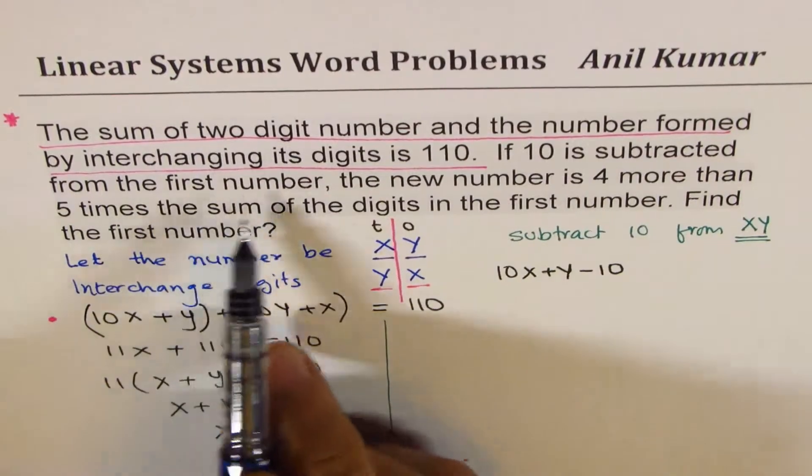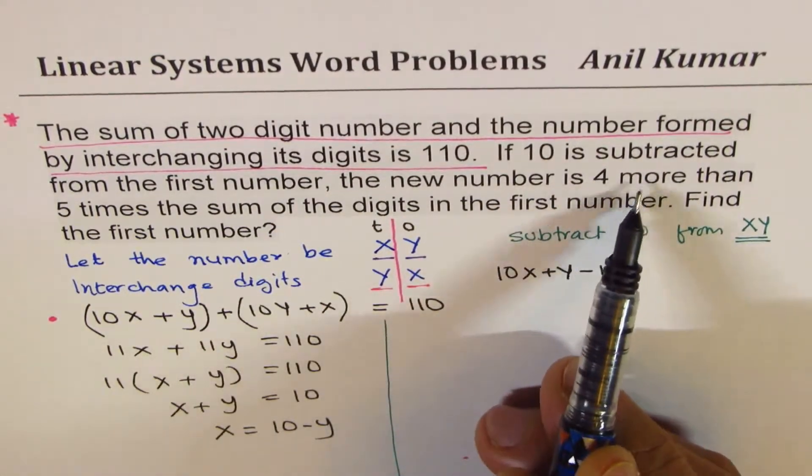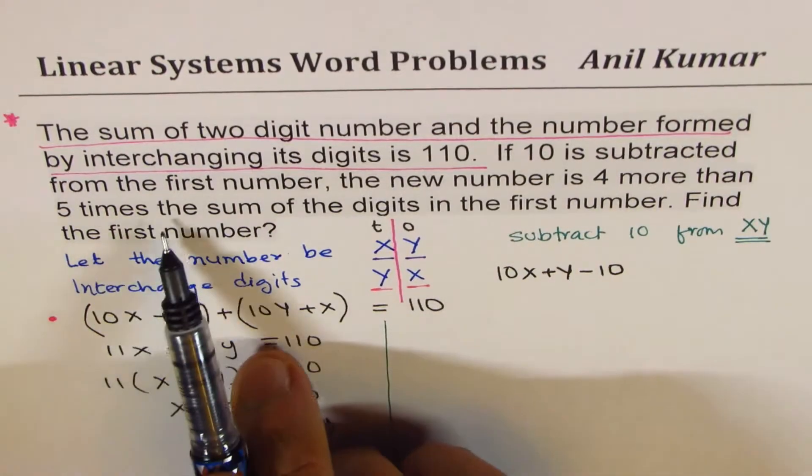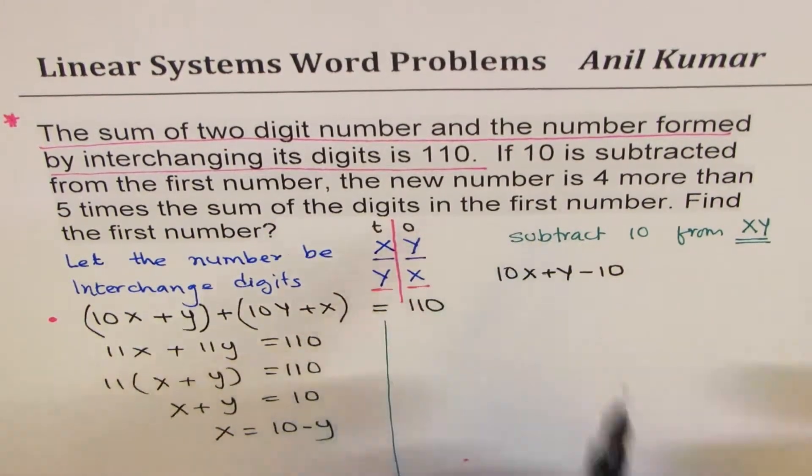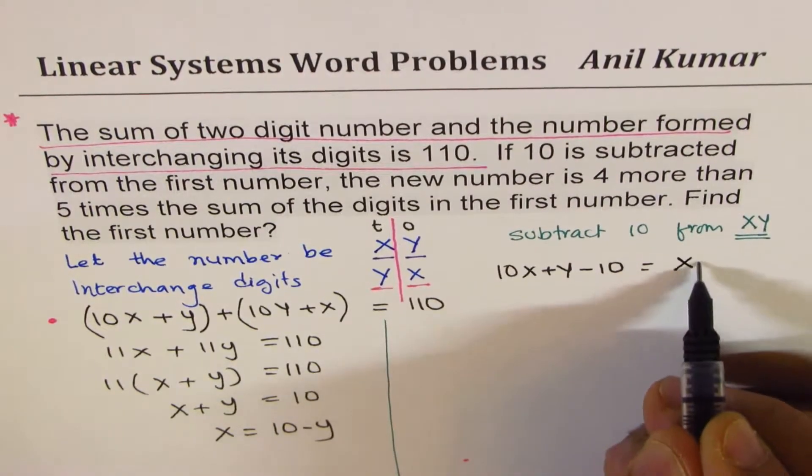So it says, if 10 is subtracted from the first number, the new number is 4 more than 5 times the sum of digits of the first number. Sum of digits is x plus y.